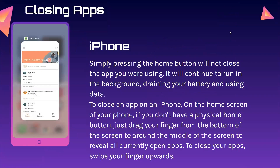Closing apps on iPhone: simply pressing the home button will not close the app you are using. It will continue to run in the background, draining your battery and using data. To close an app on an iPhone without a physical home button, drag your finger from the bottom of the screen to around the middle of the screen to reveal all currently open apps. Then swipe your finger upwards to close them.